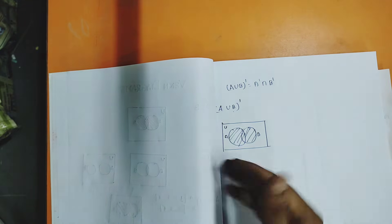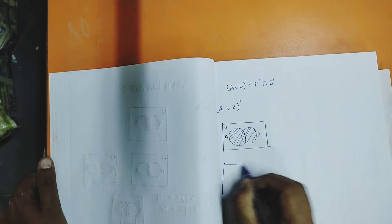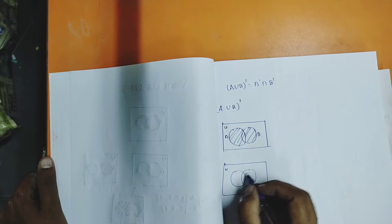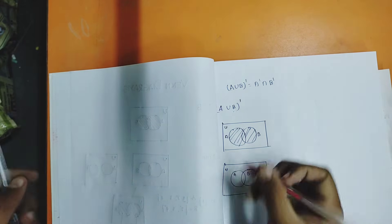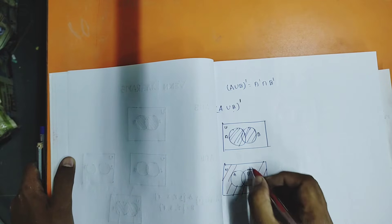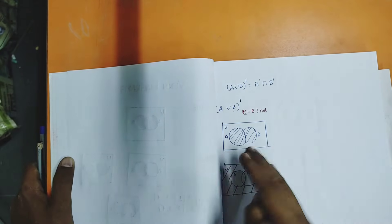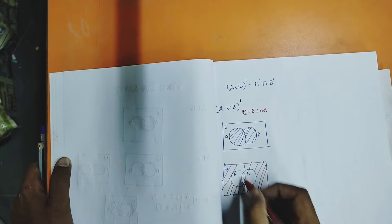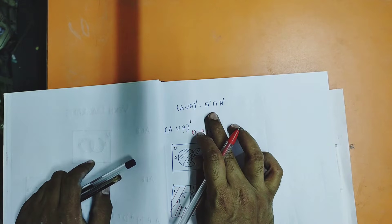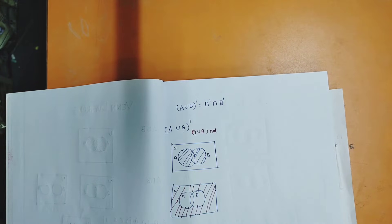What is the complement of A union B then? The remaining one — the outside one, not A union B — is the complement. So the diagram for A union B complement is: universal set with two sets A and B, and shade only the outside region, not A or B. Now let us check: will we get the same Venn diagram for A complement intersection B complement? We should get the same if De Morgan's law holds — if we verify with Venn diagrams it must come out the same.